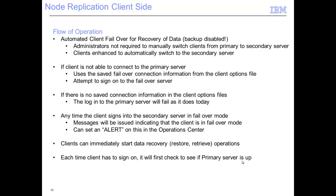Any time the primary server fails and clients connect to the secondary server to do restores, a message is logged in the activity log. You can set up an alert in the Operations Center to be notified about this failover and that clients are restoring from the secondary server. Each time a client re-logs on, it will check first to see if the primary server is up, and if so, start using it instead of the secondary failover server. Node replication keeps track of replication state — if a client had done a backup to the primary server that had not been replicated to the target server, and the primary server then failed, the client would get a message stating that the data on the target server does not reflect the most recent backup.